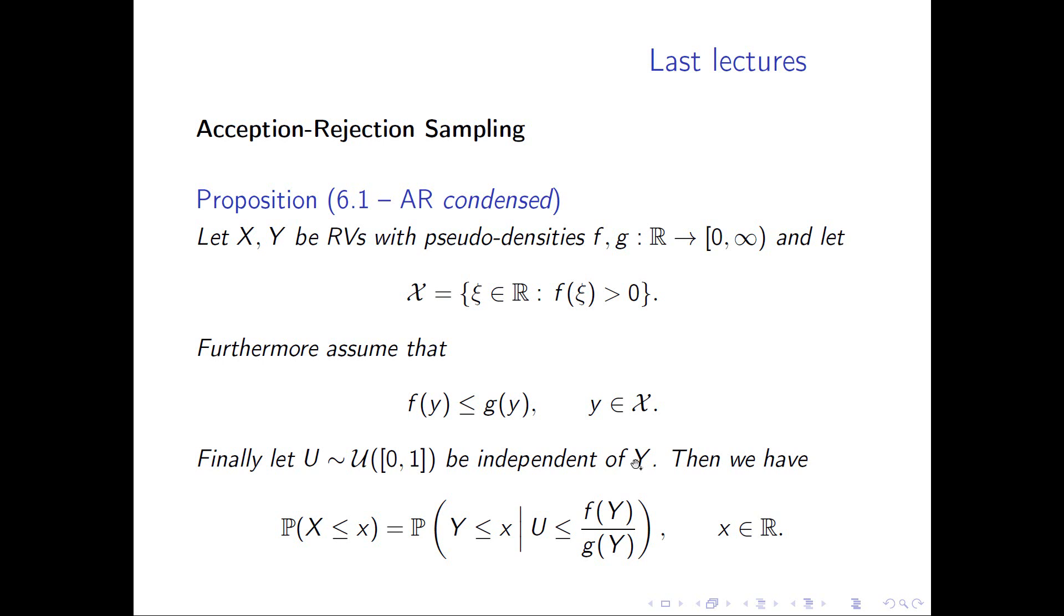If we are able to sample from a uniform distribution on [0,1] independent of Y, then we have solved our problem. The probability P(X ≤ x) equals the conditional probability P(Y ≤ x | U ≤ f(Y)/g(Y)). So we sample Y corresponding to the pseudo density g, then we check this ratio after having sampled U. If this is okay, then we keep our sample from Y, and this sample is a sample from X.